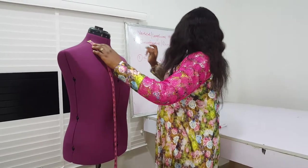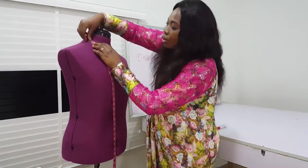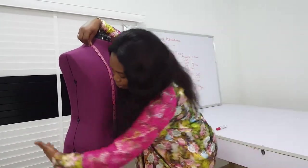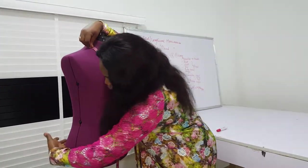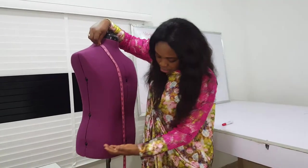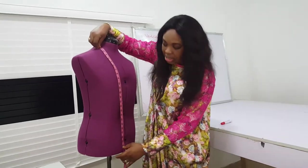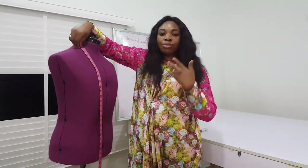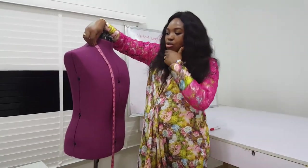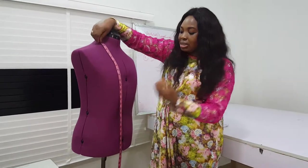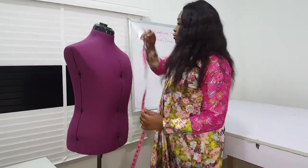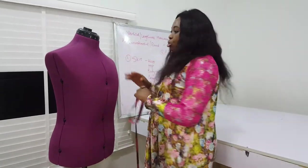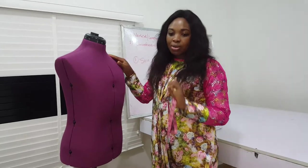Then take the shoulder-to-hip — use your eye measure to get the fullest part of the hip. Then you take the length of the blouse, which is your desired length. That's the measurement for a blouse.